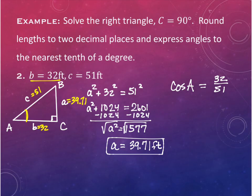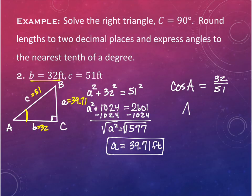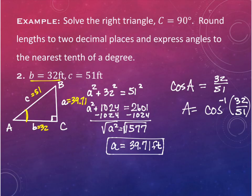This looks like something we've done before - back in chapter one as well. To find angle A when cosine of A equals 32/51, we use the inverse function - we discussed this in section 2.3. So angle A equals the inverse cosine of 32 over 51, which your calculator will handle just fine.